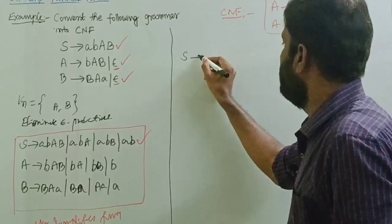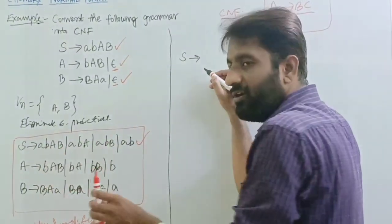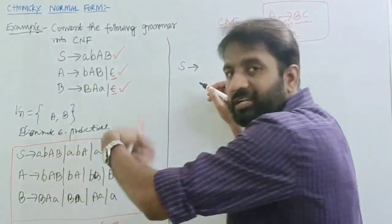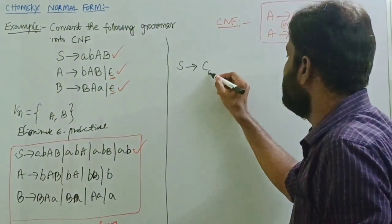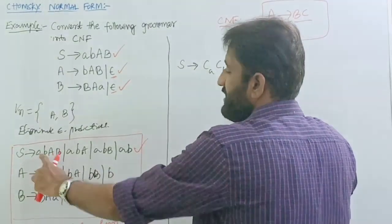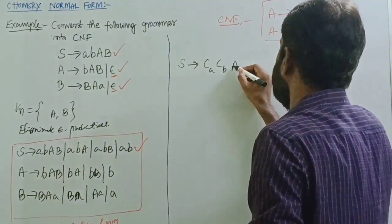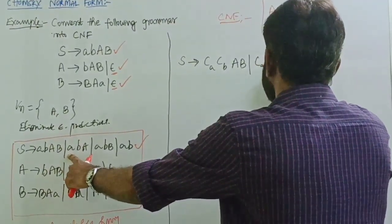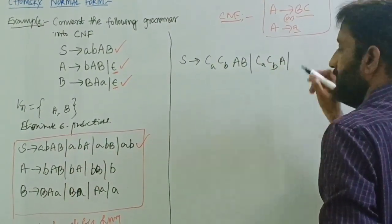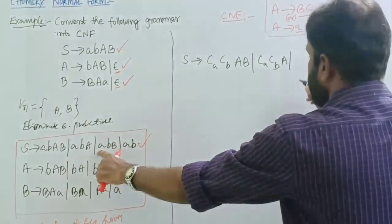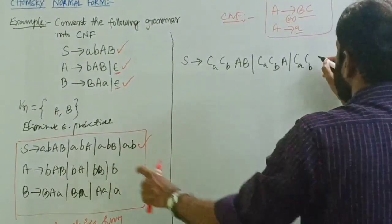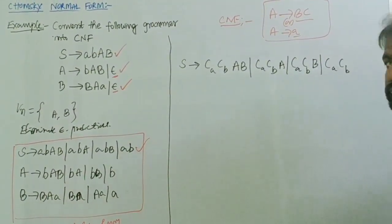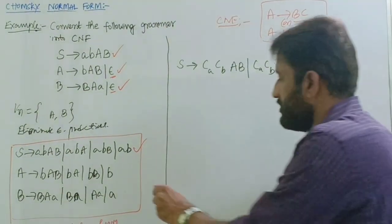Take the starting production: S tends to ABAB. We introduce two new non-terminals to convert the terminals into non-terminals. So we write CA CB in place of the terminals — in place of 'a' we write CA, and in place of 'b' we write CB. Then we have CA CB followed by capital A, capital B.